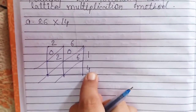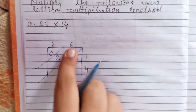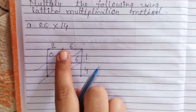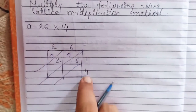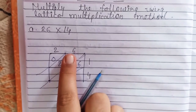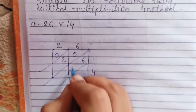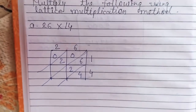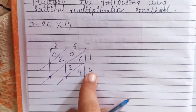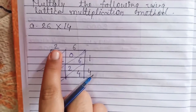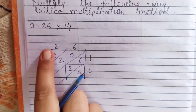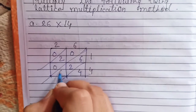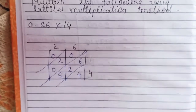Next, 4 will be multiplied by 6 and 2. 4 sixes are 24, so write 2 and 4. Next, 4 multiply by 2: 4 two's are 8. Only 1 digit, so write 0, 8.